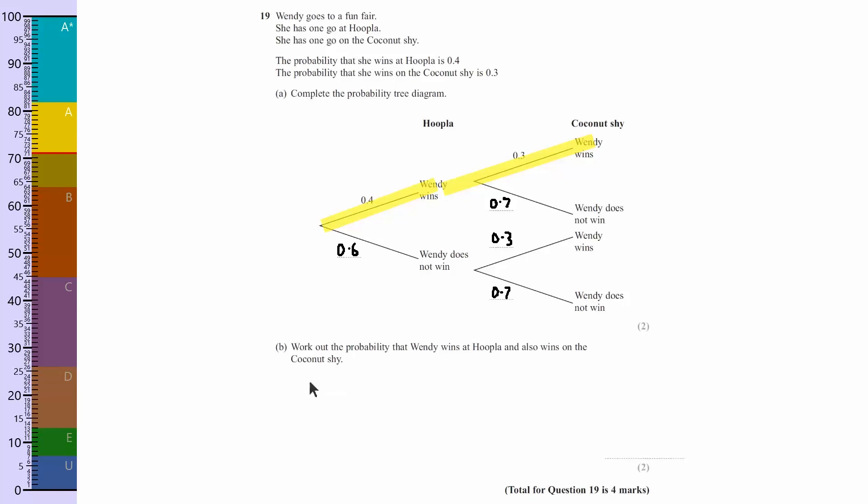So we've got 0.4 there for this and then 0.3 for this. And when you're using the word 'and,' so let's just highlight that, when we're using the word 'and' in probability that means times. And actually whenever we go across a tree diagram we're always timesing, so we need to do 0.4 times 0.3.